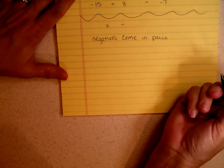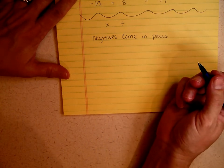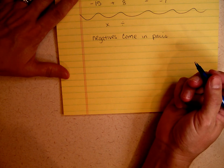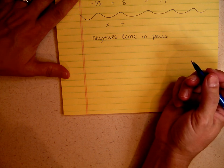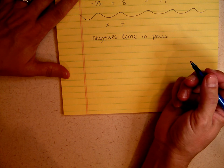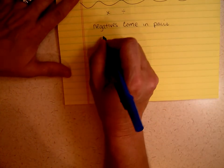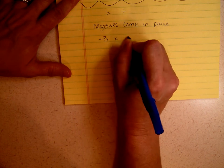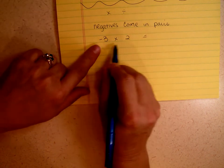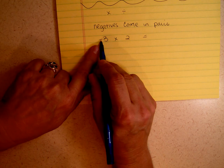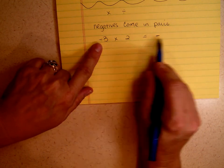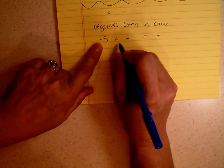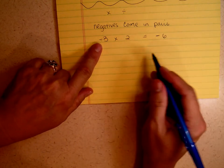What do I mean by that? Very simply, you will never find just one negative sign. You will find 2, or maybe 4, 6, 8, 10 — but you will never find 1, 3, 5, or 7. If I have negative 3 times 2, how many negative signs do you see? Only 1. That tells me my answer has to be negative, because I have to have 2 negatives in that statement. 3 times 2 is 6, so my answer is negative 6.